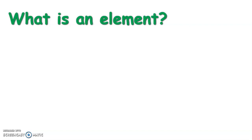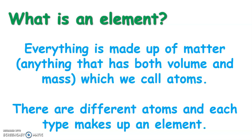First, a quick recap of what an element is. The periodic table shows us all the elements discovered so far — well over a hundred now. Everything is made up of matter — anything that has mass and volume. All matter is made up of atoms. There are over a hundred different types of atoms, each one being an atom of a particular element. Within any element, all the atoms are the same type, and any substance made up of only one type of atom is called an element.